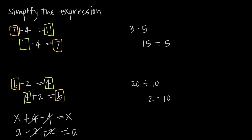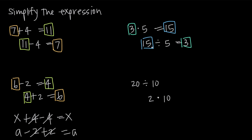Multiplication and division are the same way. If we start with 3 and multiply it by 5, 3 times 5 gives us 15. Then if we start with 15 and divide 5 back out, we of course get back to 3. 15 divided by 5 is 3. So we started with 3, got to 15, and dividing by 5 we get back to 3.